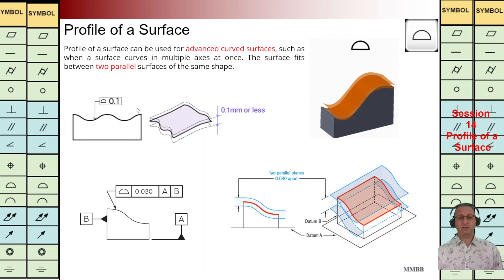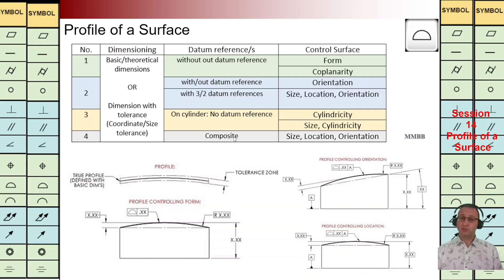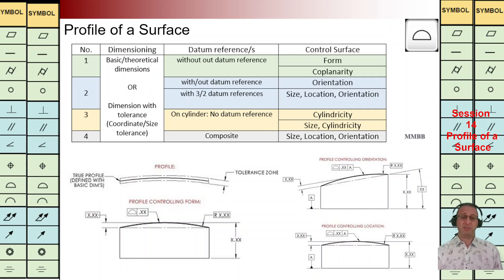By comparing these two examples, we can see sometimes we are going to have a reference plane and sometimes we don't. Here we have this table — we are going to make four different groups based on the way of dimensioning: do we use basic dimensioning or size with tolerance, and do we have any datum reference or not? Do we check the cylinder, and how many feature control frames do we have? Based on different situations, we are going to check different items: form, coplanarity, orientation, location, size, cylindricity — we are going to discuss all of them one by one.